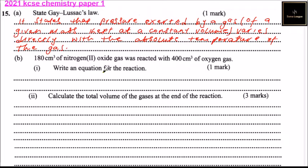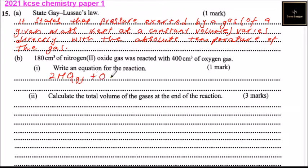That is what Gay-Lussac's law states. Part B: 180 cm³ of nitrogen oxide gas was reacted with 400 cm³ of oxygen gas. Write an equation for the reaction. The equation is: two moles of nitrogen oxide gas plus oxygen gas